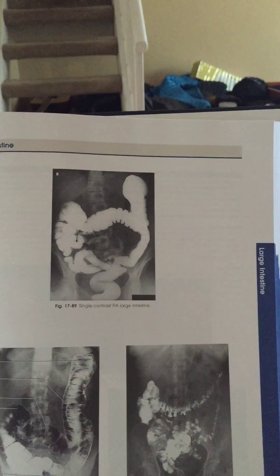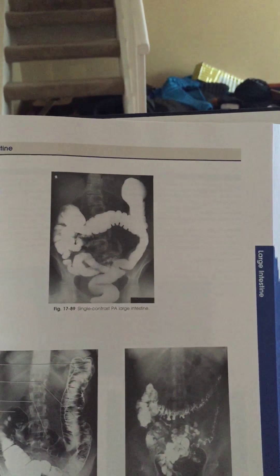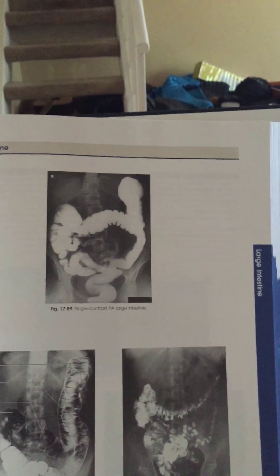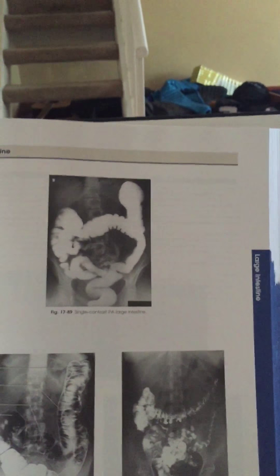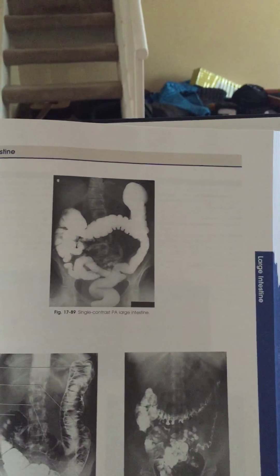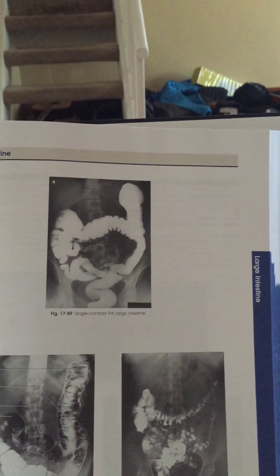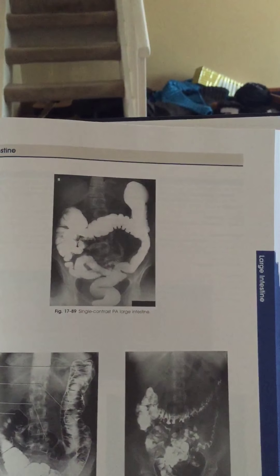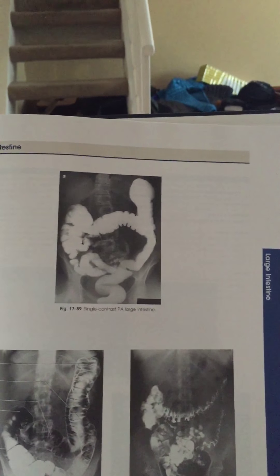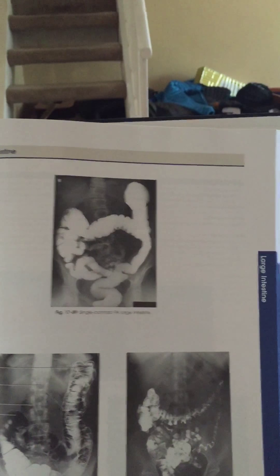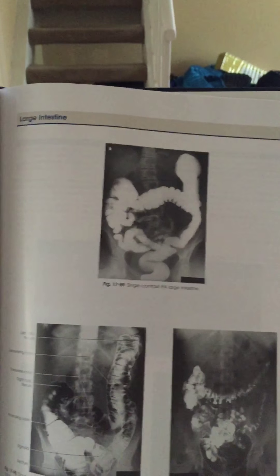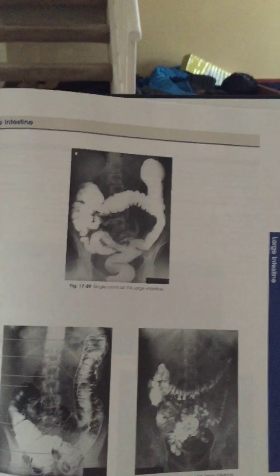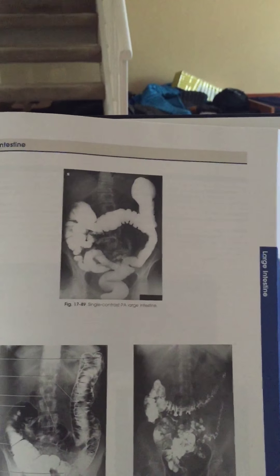In my BE trigger it was a PA projection. What you're looking for is evidence of proper collimation, the entire colon including flexures and the rectum. You want the vertebral column centered so that the ascending and descending portions of the colon are included, and an exposure technique that shows all the anatomy.